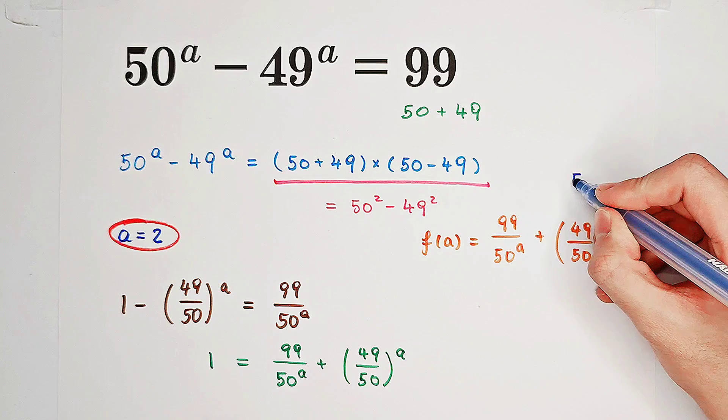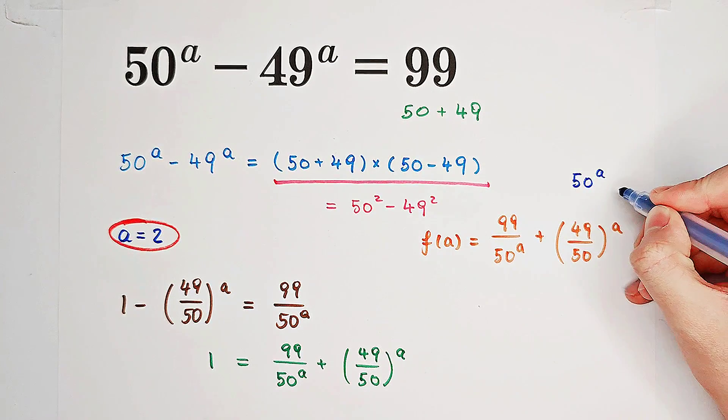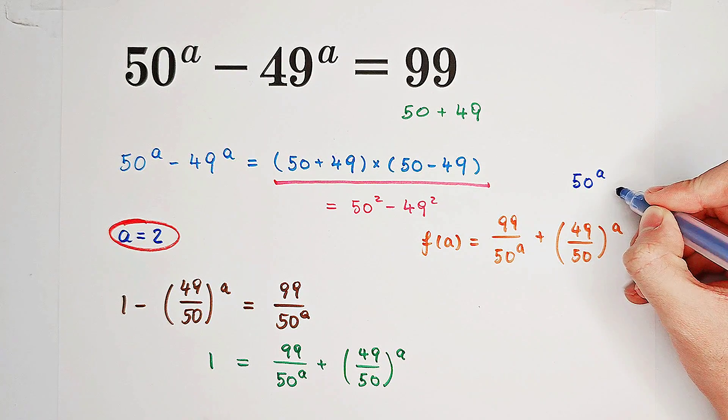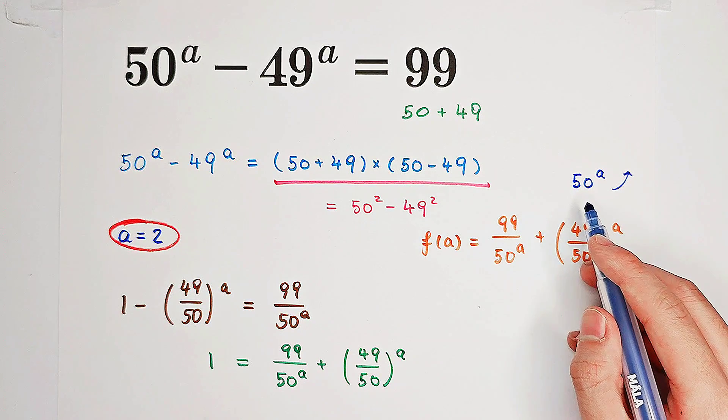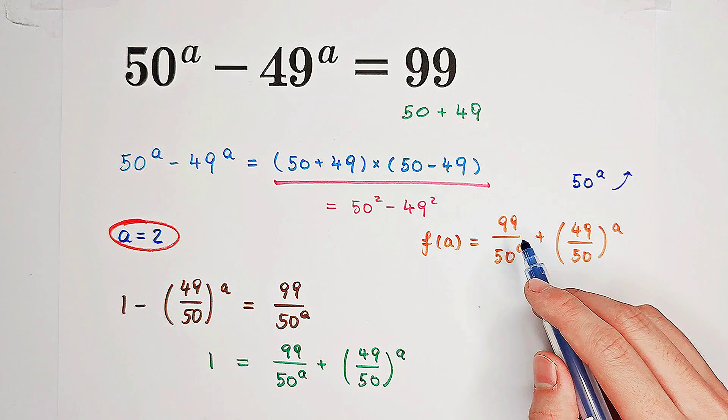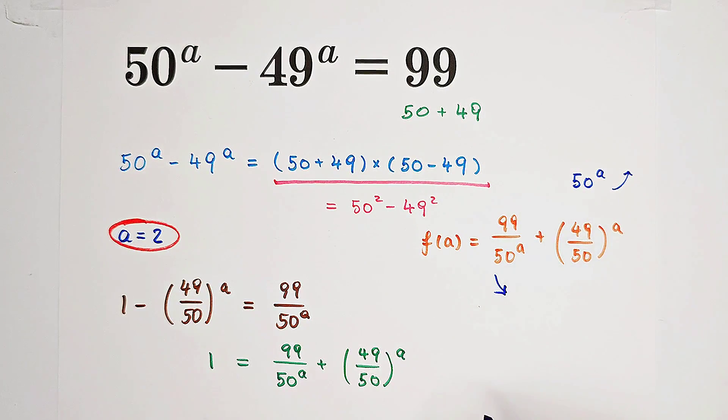Now, we know that 50 to the power of A is a function of A which is monotonically increasing. So, that means 1 over 50 to the power of A is monotonically decreasing, and 99 over 50 to the power of A is also monotonically decreasing.